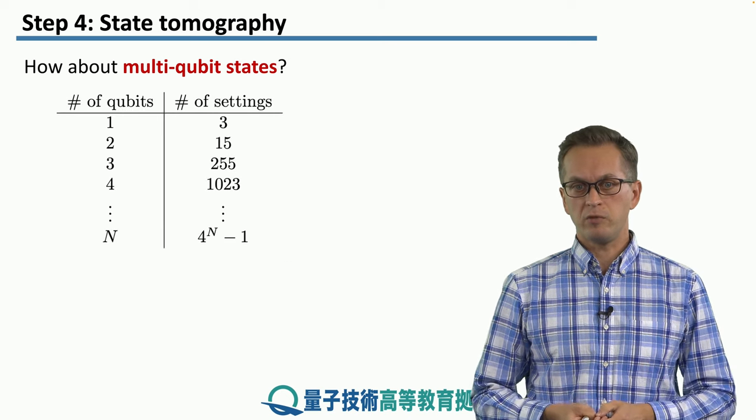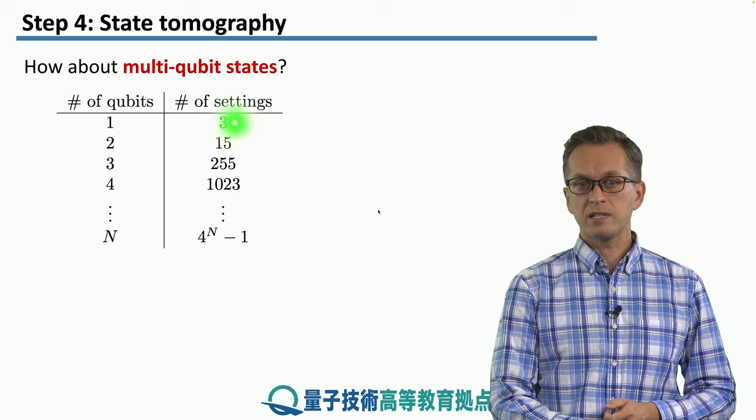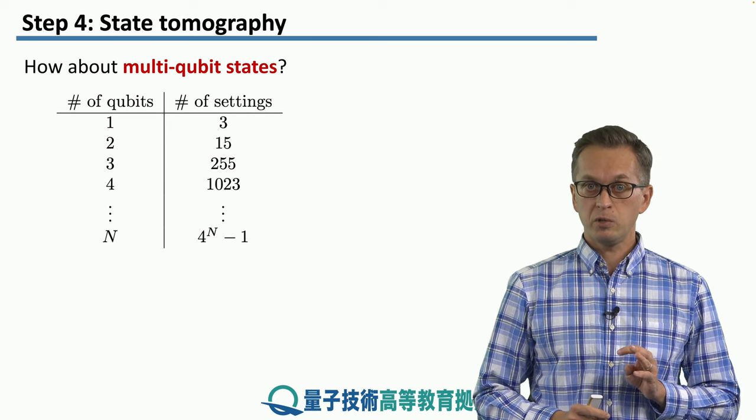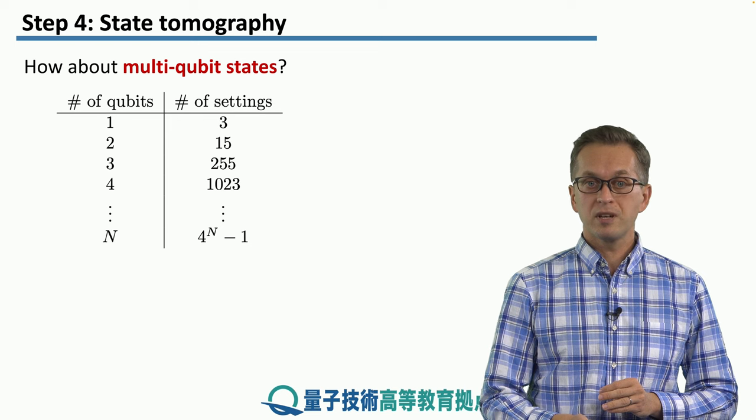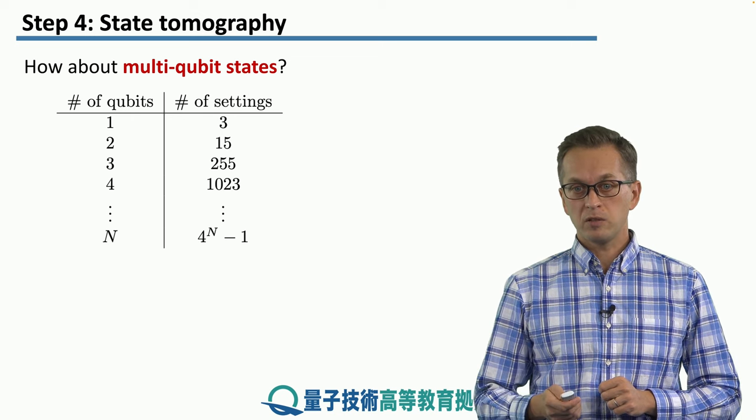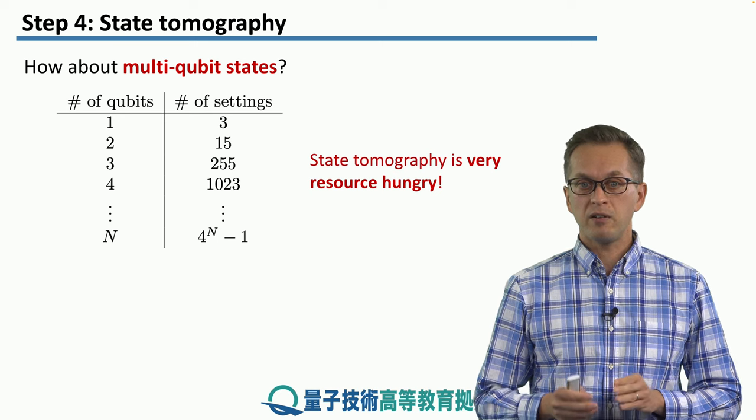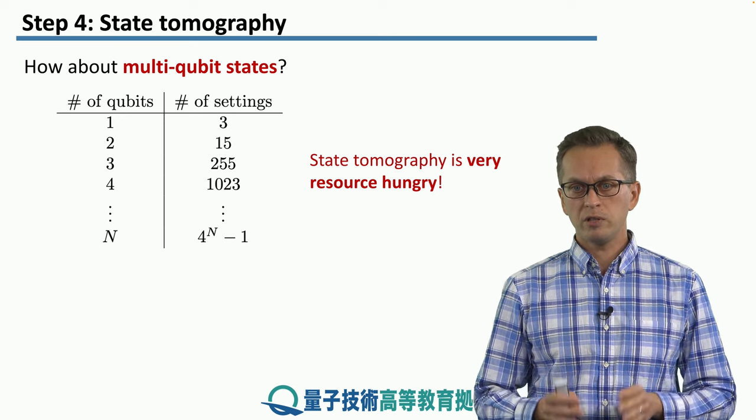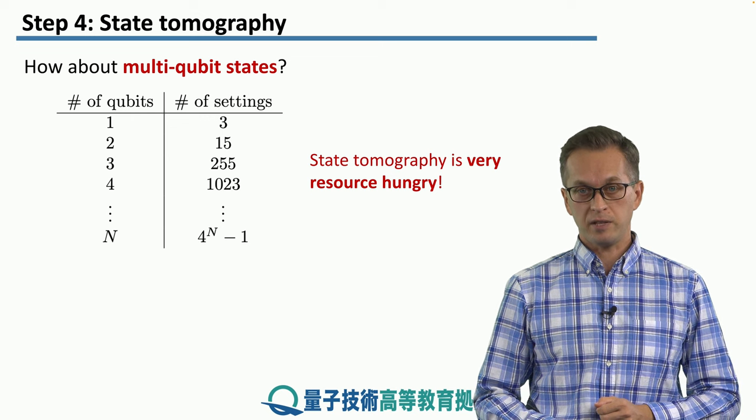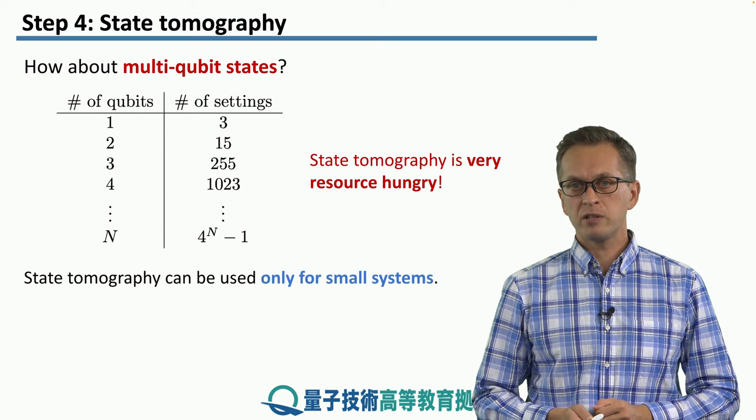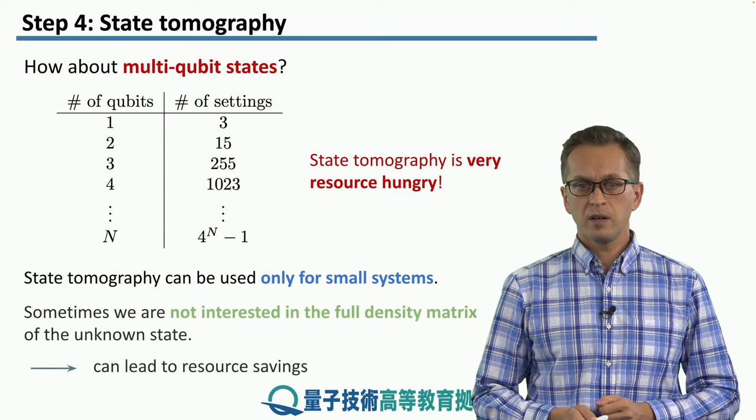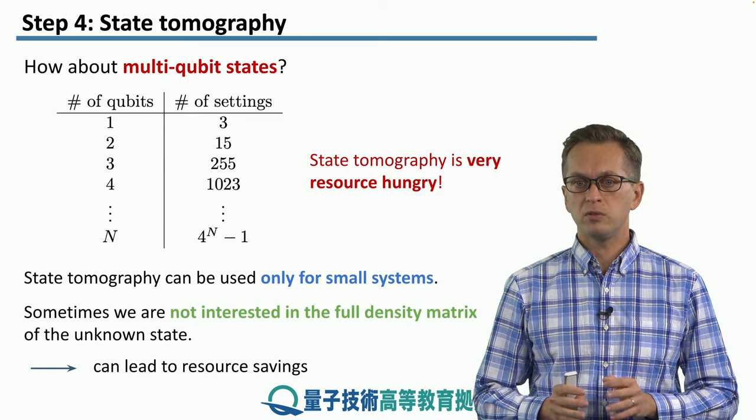So how about if we go to higher number of qubits? This is the table that shows you the scaling of all the measurement settings. So we saw that for one qubit, we need three measurement settings. For two qubits, we need 15. For three qubits, turns out we need 255. For n qubits, we need 4ⁿ minus one. So this should convince you that state tomography is a very resource hungry process. If you want full knowledge of the state, we have to perform many, many measurements in all of these exponentially many measurement settings. So state tomography is really suitable only for small systems. One qubit, two qubits, perhaps three qubits.